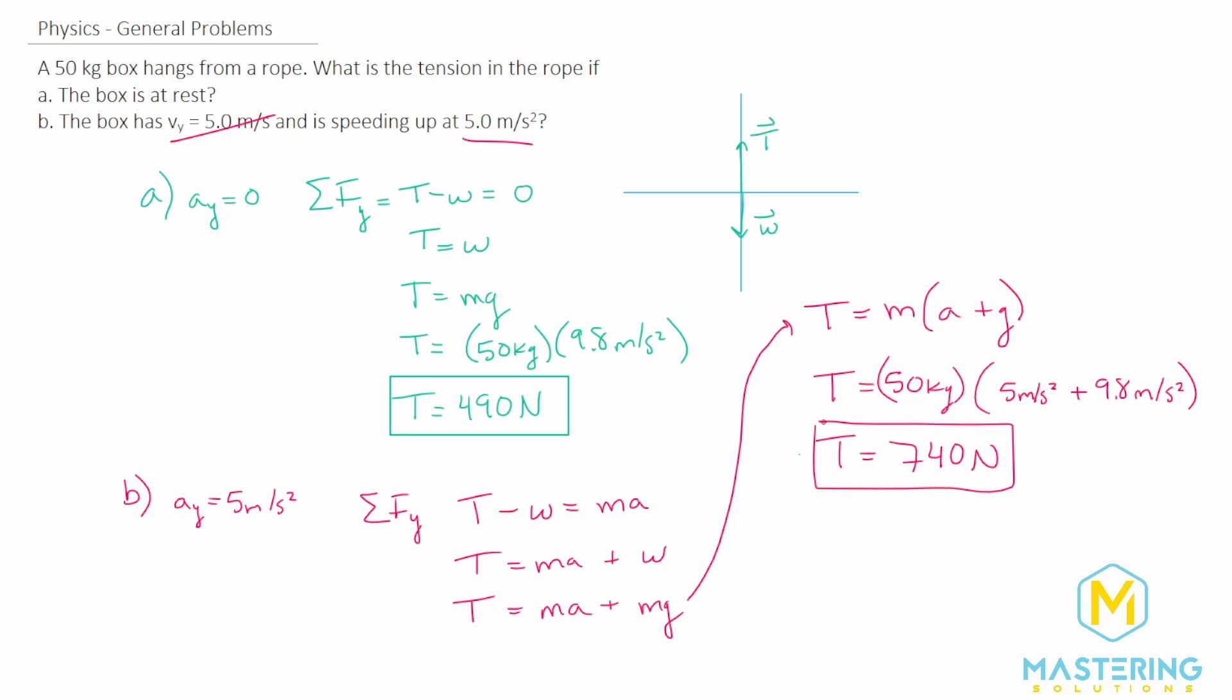So here are your two answers. For part A when it's at rest, we have 490, and when it's accelerating, we have a tension in the rope of 740 newtons.